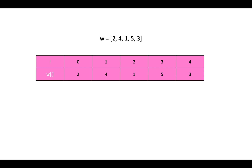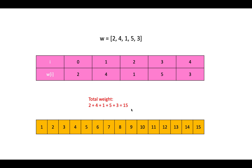The first thing we need to do is calculate the total weight, which is 15. We can add these weights together to get 15. To simplify our problem, we can use 15 numbers and map these five indexes to 15 numbers. For index 0, its weight is 2, so we map index 0 to numbers 1 and 2. For index 1, its weight is 4, so we map it to four numbers from 3 to 6.